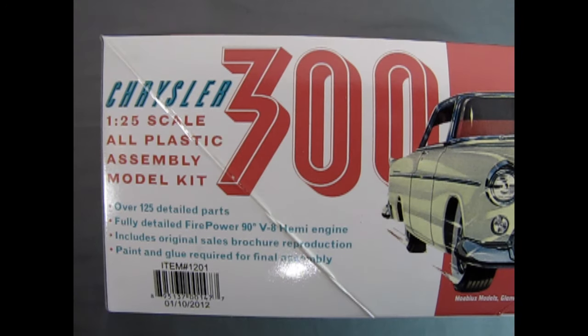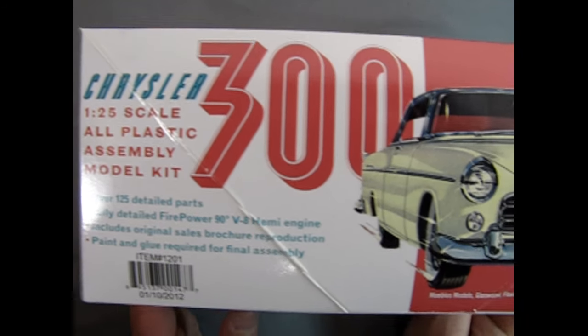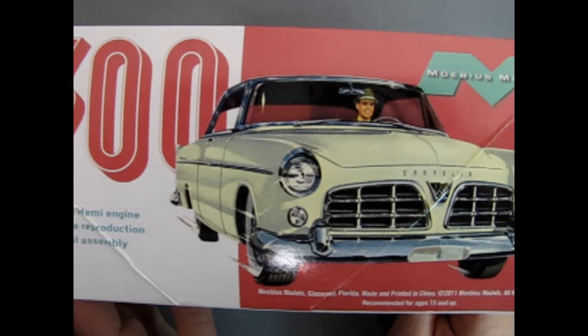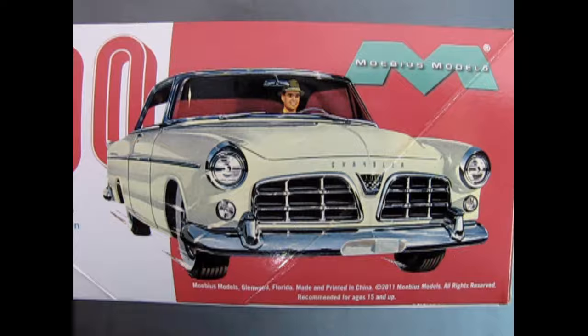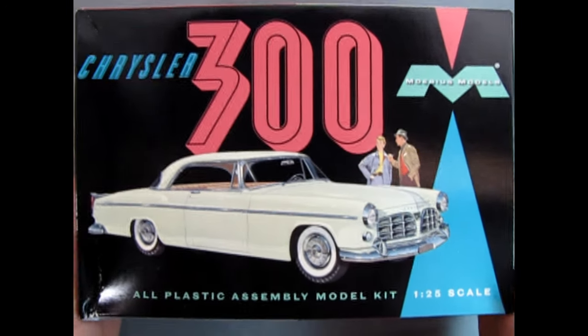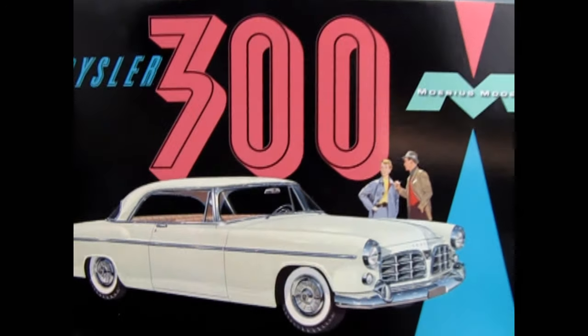We get more details of the kit on this side of the box where we see that this is a 125th scale all plastic assembly model. Over 125 detailed parts, fully detailed firepower 90 degree V8 Hemi engine, includes original sales brochure reproduction, paint and glue required for final assembly. There's more of that old style advertising on the end of the box. Now let's see what's underneath the lid.